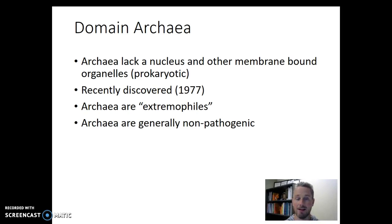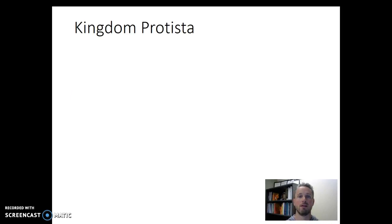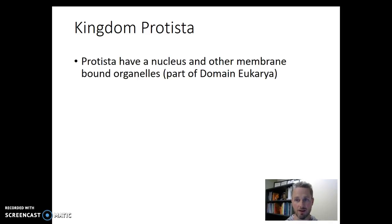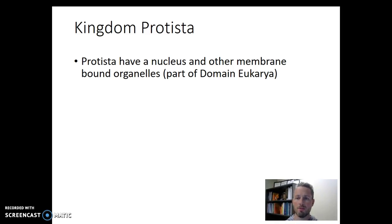So far we've talked about bacteria, which are prokaryotic and all microbial, and archaea, which are prokaryotic and all microbial. Another group of microbial life forms are the protists or protista. Protists do have a nucleus and also have other membrane-bound organelles like the endoplasmic reticulum, the Golgi, lysosomes, and things like that. So we put them in the domain Eukarya because they have a nucleus.